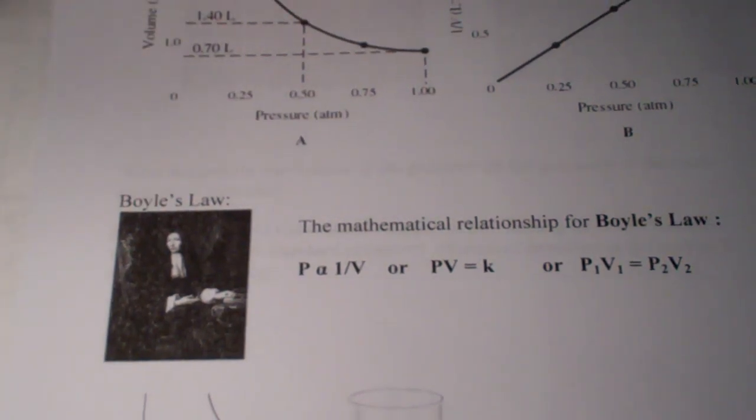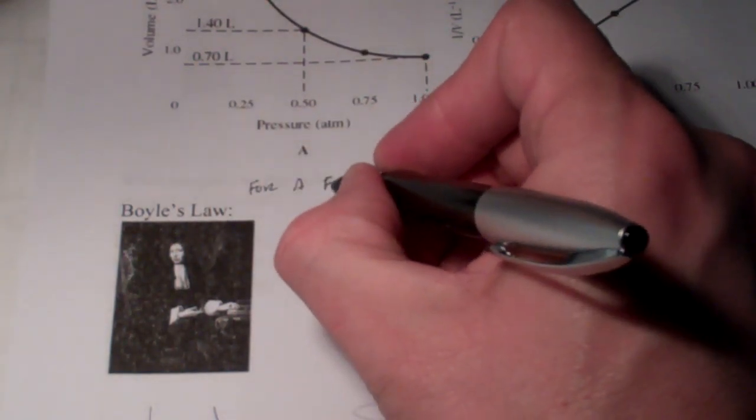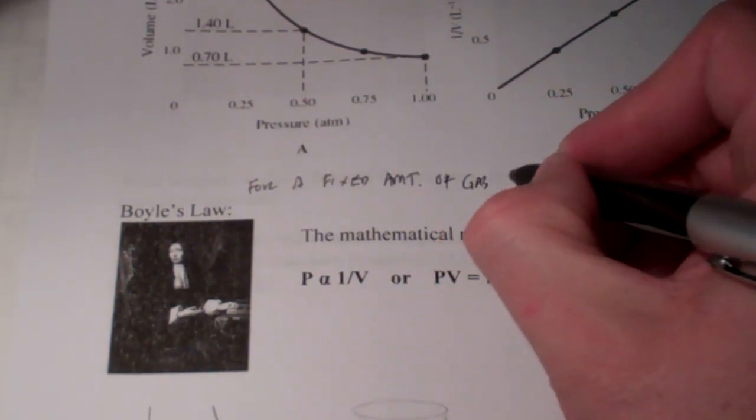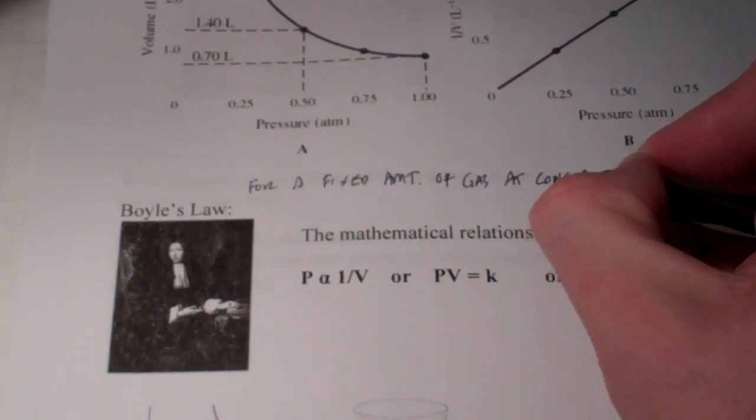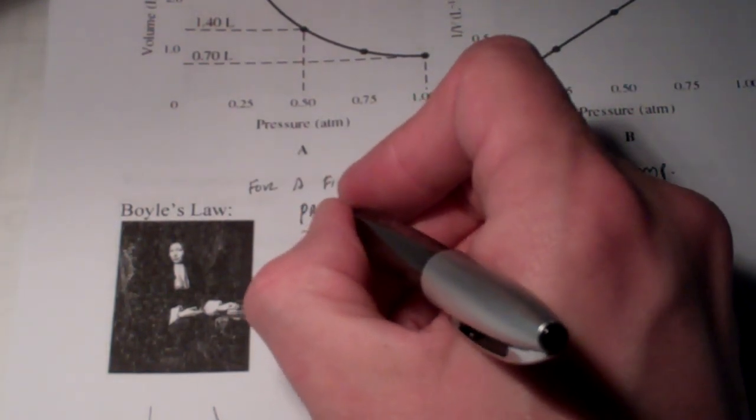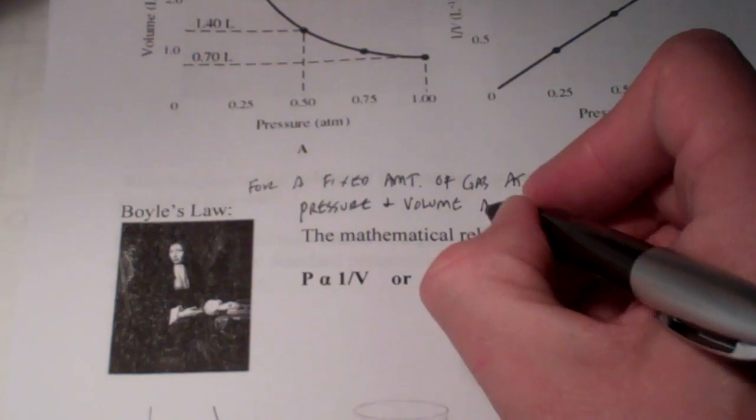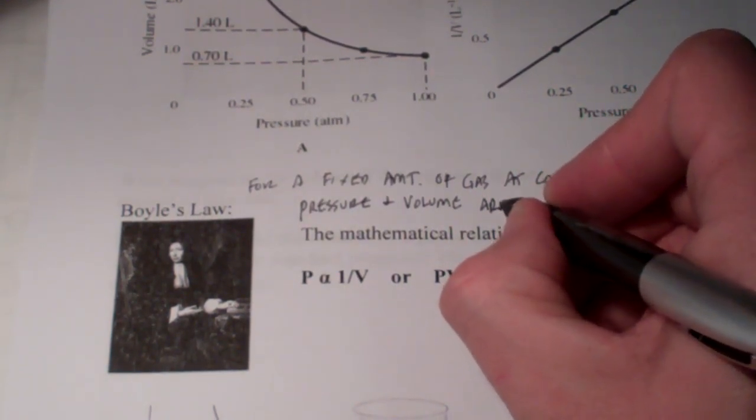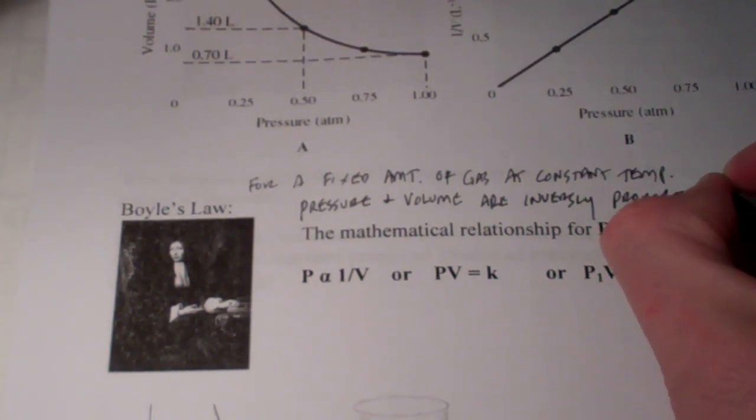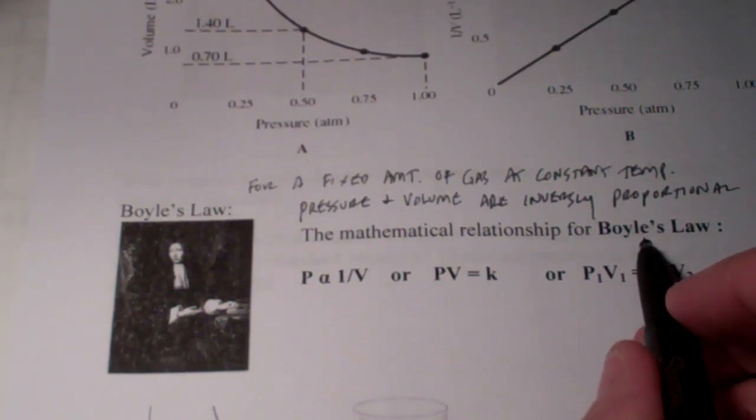So, Boyle's Law states the following. I'm going to squeeze it in up here. For a fixed amount of gas, I'm going to abbreviate amount, AMT, at constant temperature, pressure, and volume are inversely related or inversely proportional. Now, think about what that means, inversely. When one goes up, the other goes down.